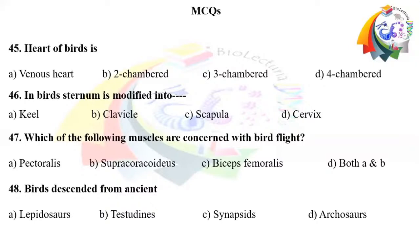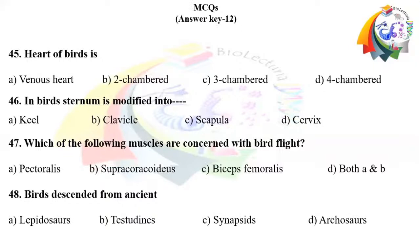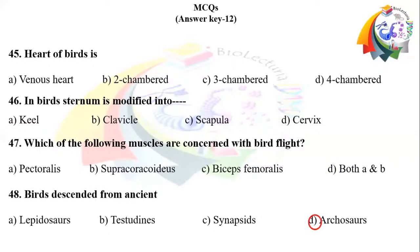Answers: Question 45 right option D — heart of birds is four-chambered. Question 46 right option A — sternum is modified into a keel. Question 47 right option D — pectoralis and supracoracoideus muscles are both involved in flight. Question 48 right option D — birds descended from ancient Archosauria.